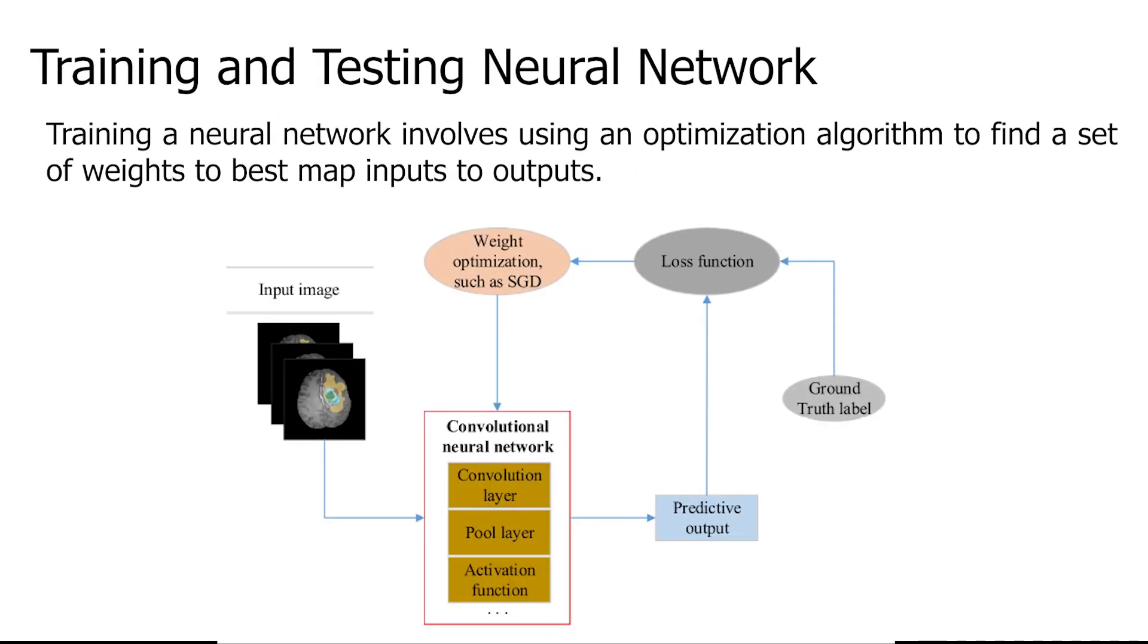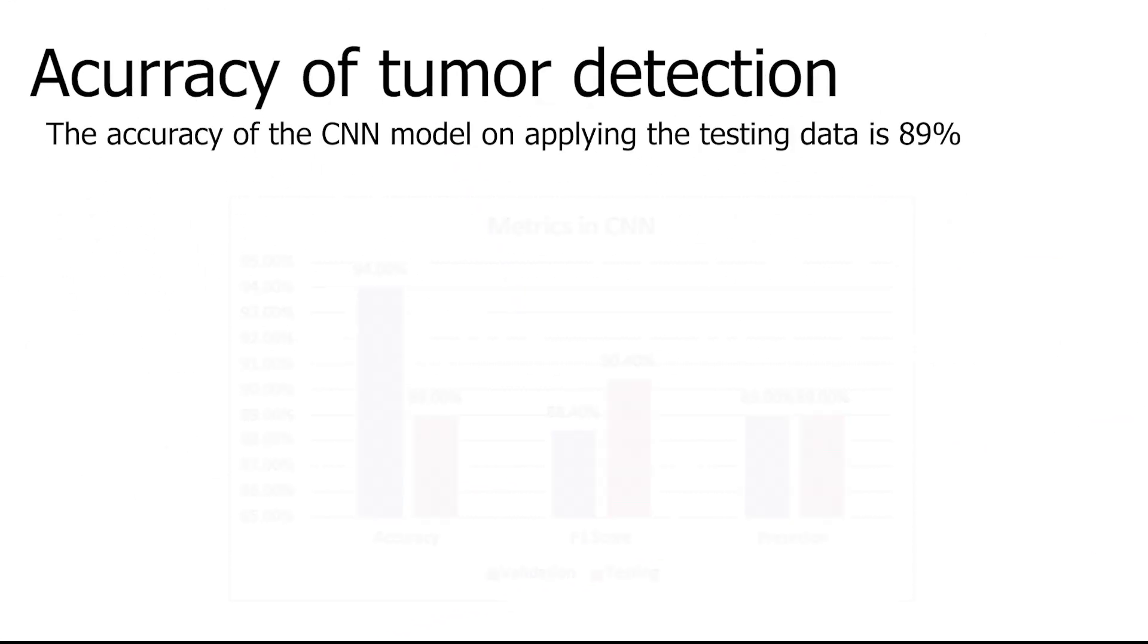Calculated predictive outputs are compared with the ground truth, and the loss between truth and predictive values is also calculated. After that, in the backpropagation, weighted values and bias values are updated to make this loss as minimum as possible. After the training, the same neural network is used for testing the accuracy with another set of images. Accuracy can be defined as the fraction of predictions the model got right. The accuracy of the CNN model on applying the testing data is 89 percent.